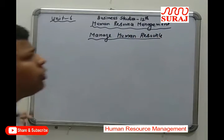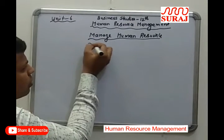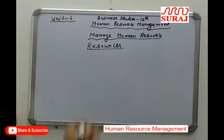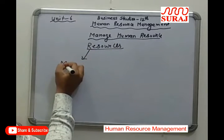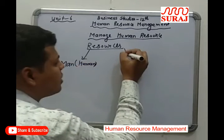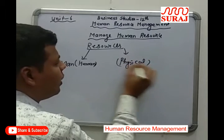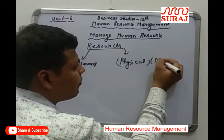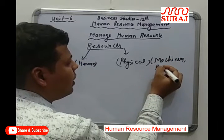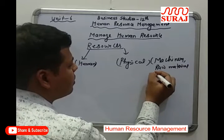Firstly, I will tell you about the resources of the business organization. There are two types of resources: human resources as well as physical resources. In physical resources we include machinery, raw material, as well as money.